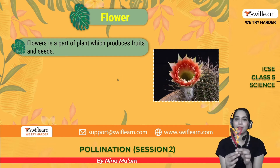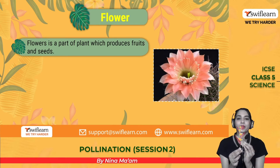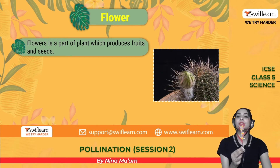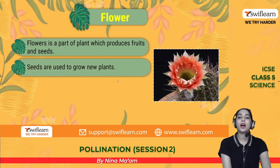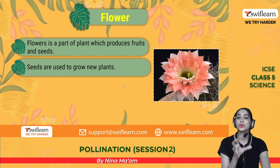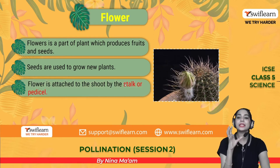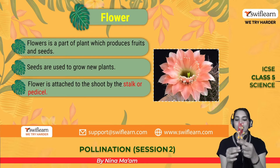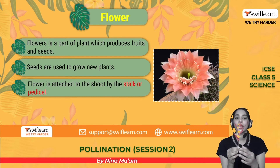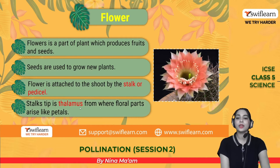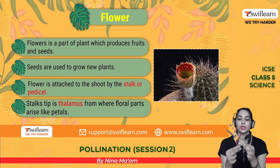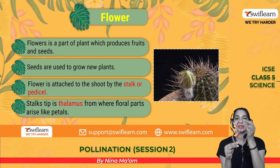In this flower there are ovaries and ovules, which is why the flower is the part that produces fruits and seeds. Seeds are used to grow new plants. A flower is attached to the shoot by a stalk or pedicel. The stalk tip is the thalamus from where floral parts like petals arise.